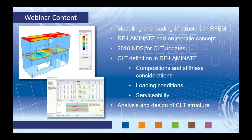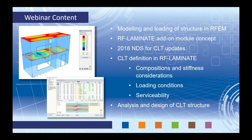Regarding the webinar content for the next hour, I want to start off in our main program RFEM, which will allow us to model the basic geometry of our structure and fully load it. Then I'll move on to the add-on module concept with RF Laminate in particular. We'll take a look at the 2018 NDS CLT updates, in particular chapter 10. Then we'll launch RF Laminate to define our CLT compositions, look at stiffness considerations, loading conditions, and serviceability for deflection checks. Finally, we'll run a full analysis and design of the CLT structure according to the 2018 NDS.